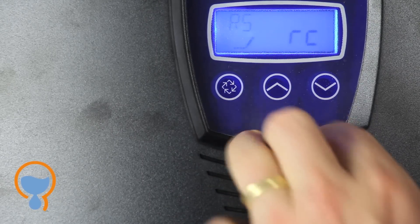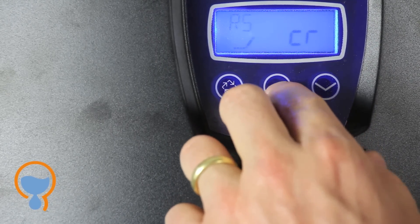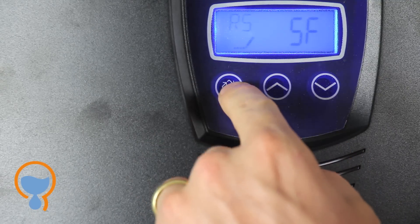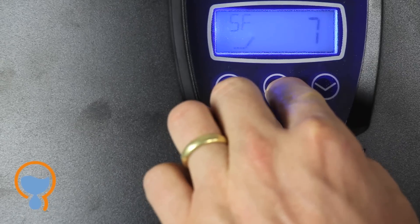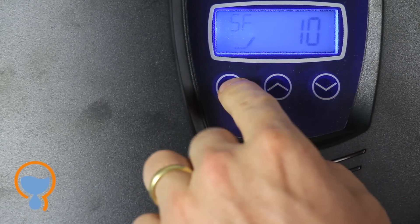The reserve capacity setting we're going to use here is SF which is safety factor. And then we're going to set the safety factor to 10% and press enter.